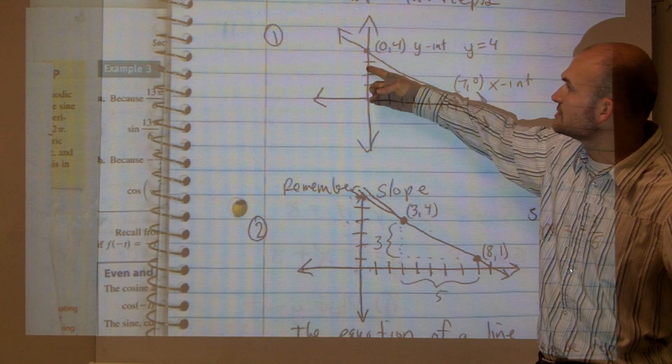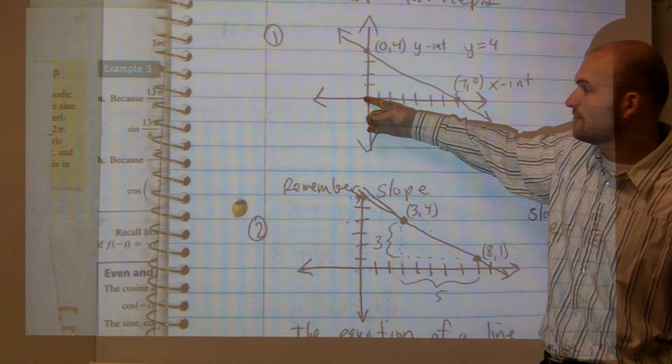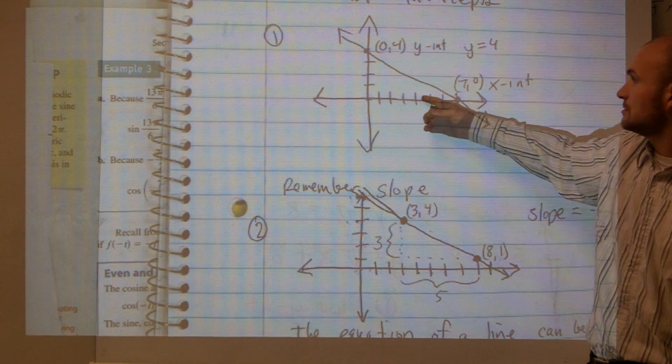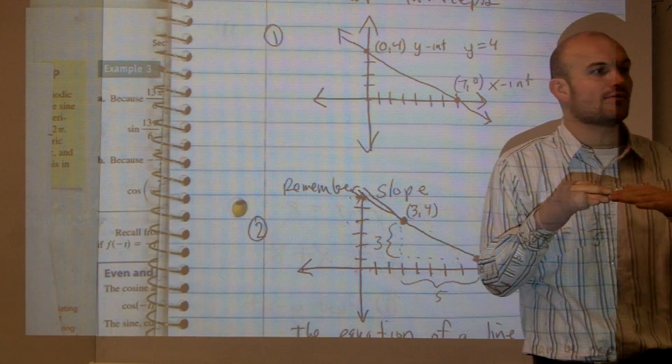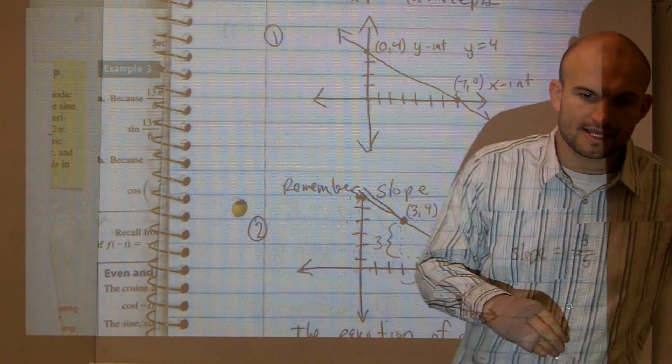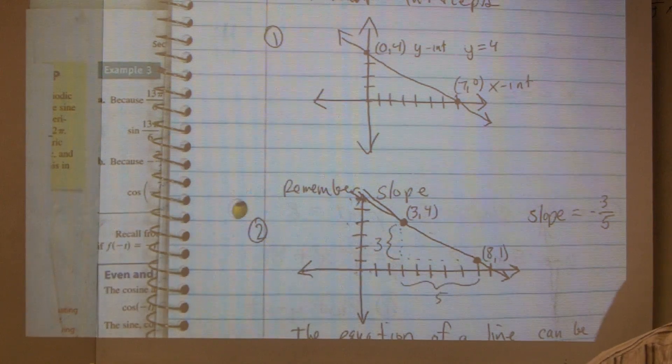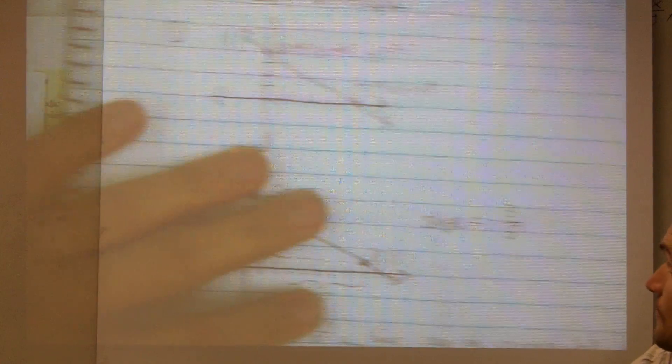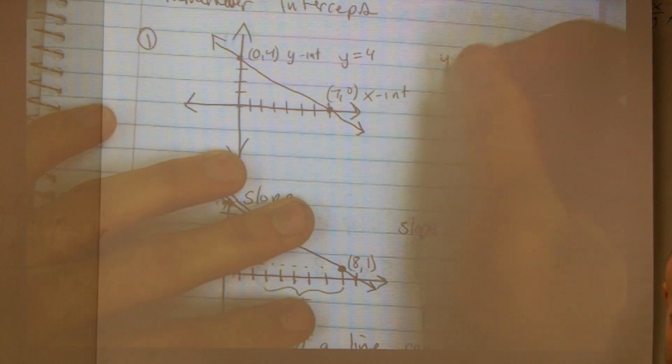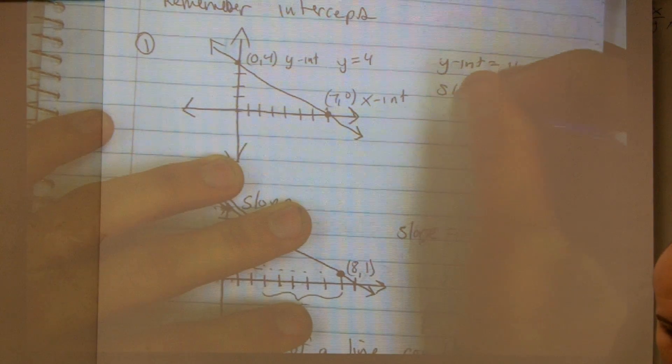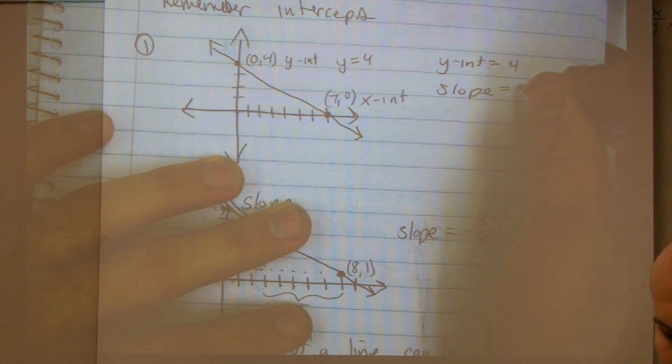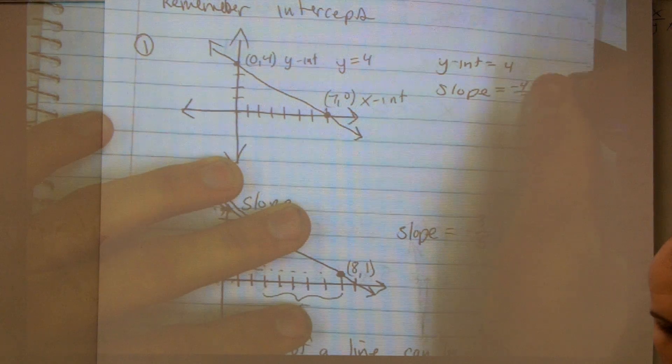We went down 1, 2, 3, 4, and how far do I have to go over? Seven. So to go from one point to the next, I had to go down 4 over 7. What I can write is, if I know my y-intercept, I can say my y-intercept equals 4 and my slope equals negative 4 over 7.